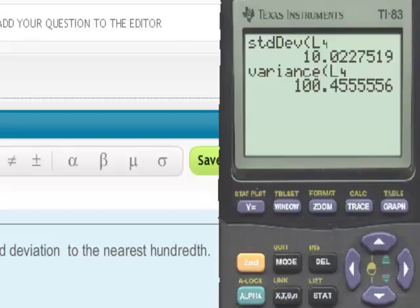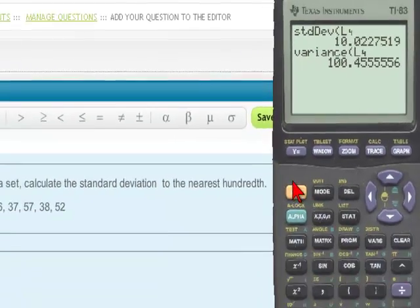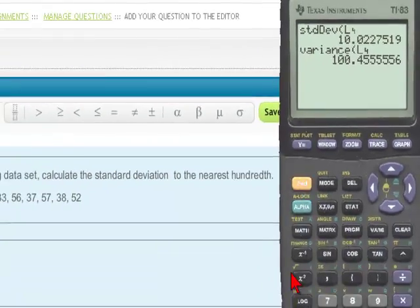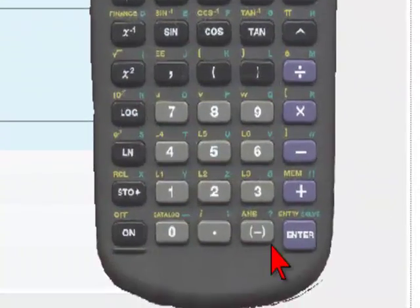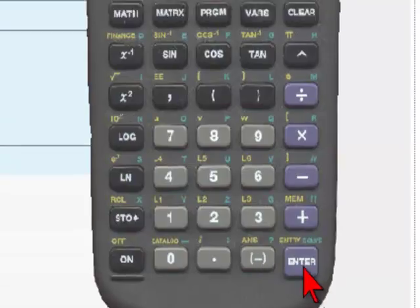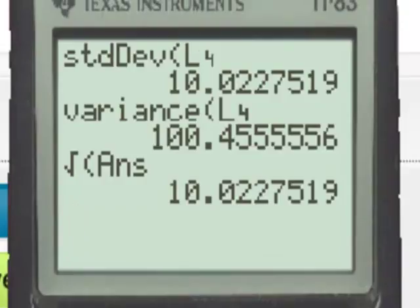The standard deviation is the square root of the variance, and we can put in this precise number using the yellow square root symbol above the X squared key. Then the yellow second key and the answer button which is above the negative sign, and hit enter. Here again we have our standard deviation, the square root of the variance.